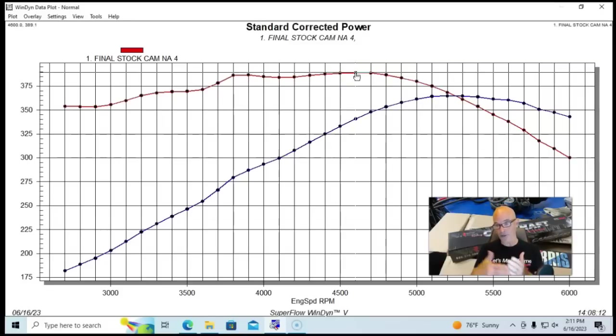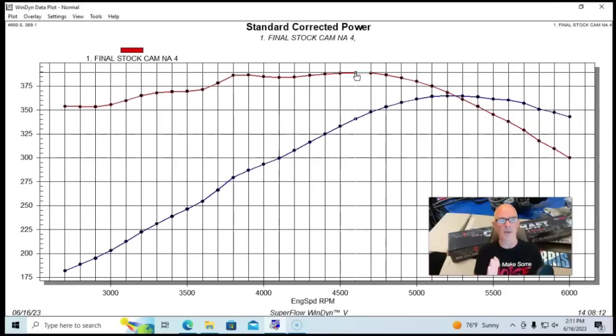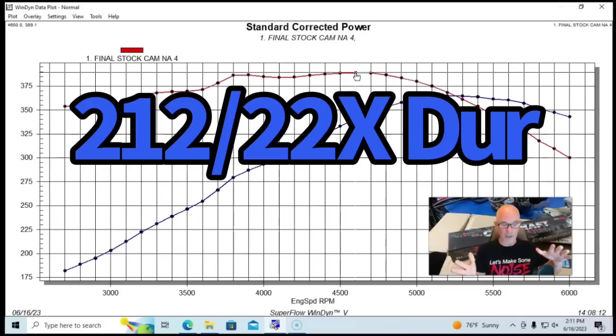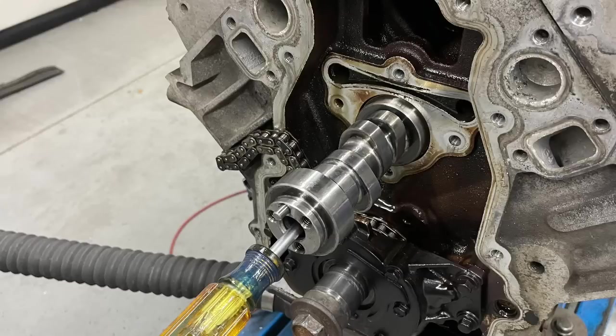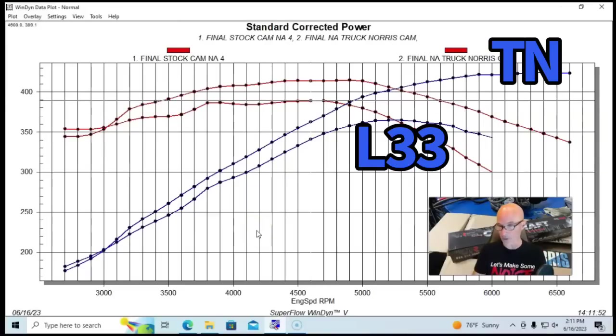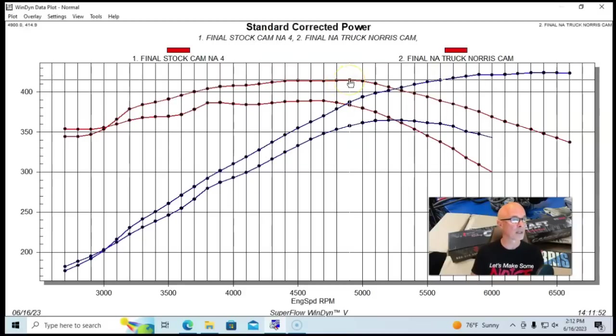And here's what happened when we put the first of our three camshafts from the guys over at Brian Tooley. This was the ever-popular Truck Norris cam. And when guys are looking for a camshaft, this kind of camshaft is the camshaft that I normally recommend to people. It has a good combination of peak power if you're looking to do that. But also, it doesn't trade off a bunch of low-speed power, and we'll see that in the comparison between these other cams. But here's what happened when we put the Truck Norris cam in. You can see we got good gains basically everywhere. So this pushed our peak power up to 424 horsepower, pushed peak torque up to 415 foot-pounds.